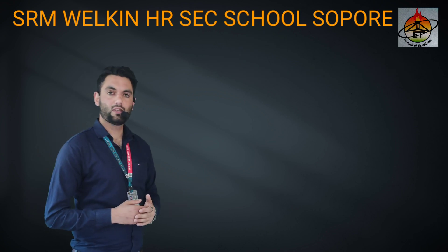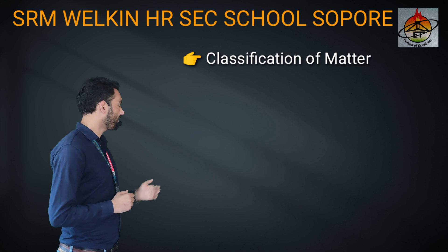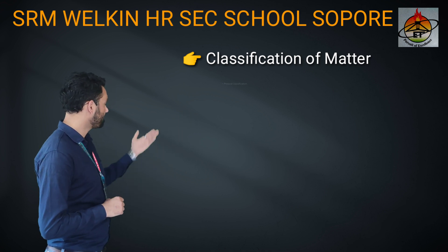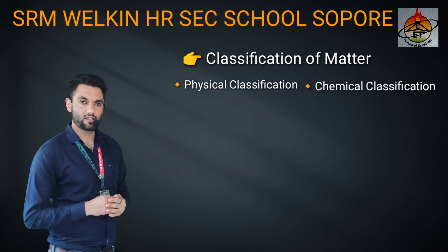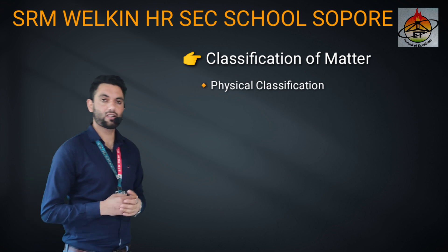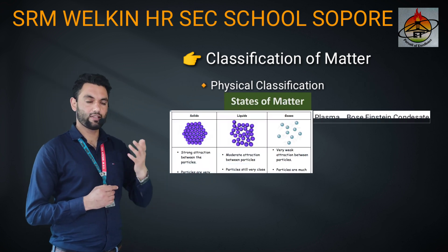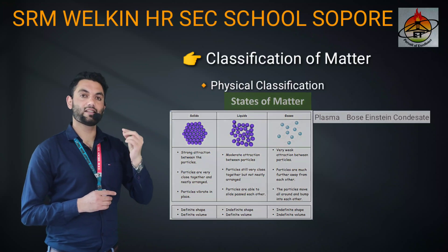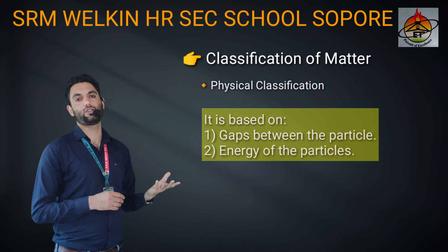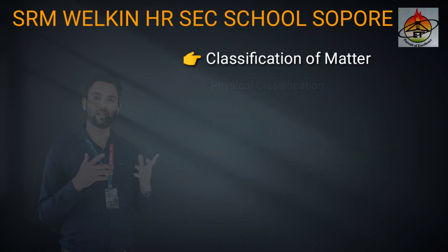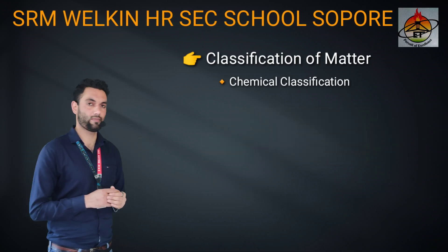Now let's proceed towards the classification of matter. Matter is classified in two ways: one is physical classification and the other is chemical classification. In physical classification, we see the different states of matter. The physical classification of matter is done on the basis of the gaps between the particles and the energy of the particles. In this chapter, we will mainly discuss the chemical classification of matter.